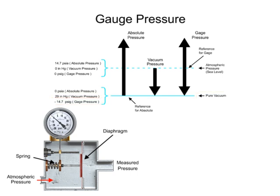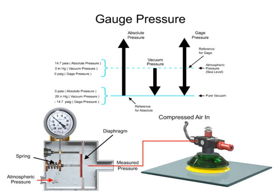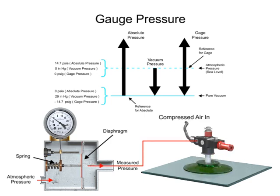Typical negative pressures include material handling of glass sheets using a vacuum gripper, where air is evacuated from the suction cup.